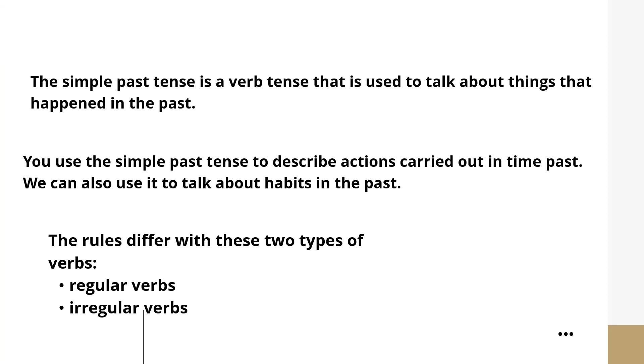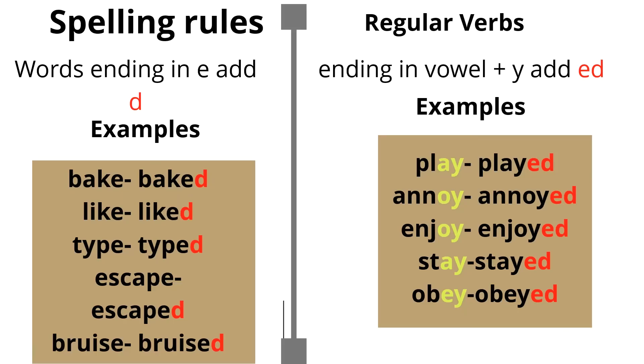The simple past tense is a verb tense that is used to talk about things that happened in the past. You use it to describe actions carried out in the past. We can also use it to talk about habits in the past. The rules differ with these two types of verbs: regular verbs and irregular verbs.